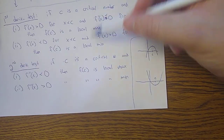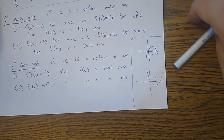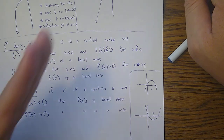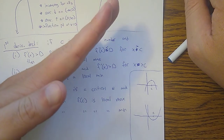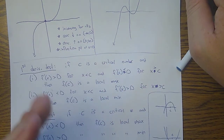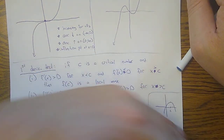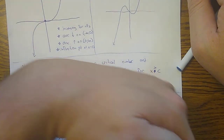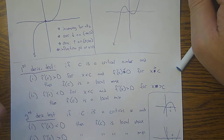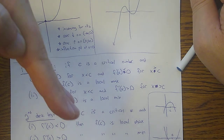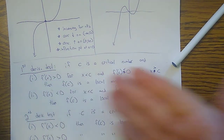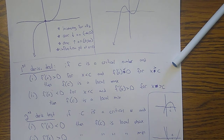It's easy to remember the first derivative test: if you're on your way up and you hit your critical point and then you're on your way down, you're hitting a high point. The other way around — decreasing and then increasing — means you're hitting a low point.